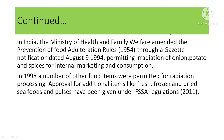In India, the Ministry of Health and Family Welfare amended the Prevention of Food Adulteration Rules 1954 through a Gazette notification dated August 9, 1994, which permitted the irradiation of onion, potatoes, and spices for internal marketing and consumption. In 1998, a number of other food items were permitted for radiation processing, and approval for additional items like frozen, fresh, and dry seafoods and pulses was given under the FSSA Regulations 2011.